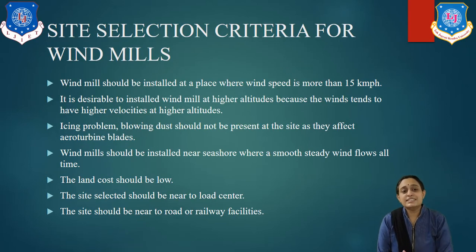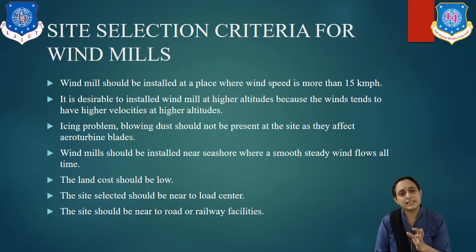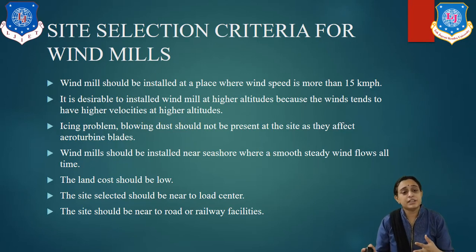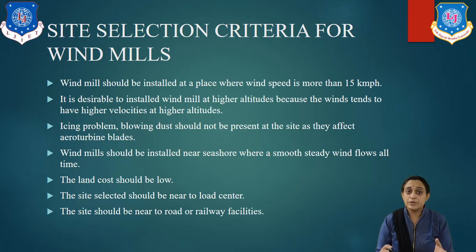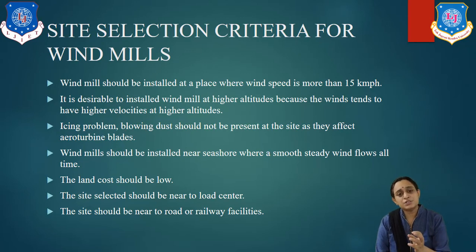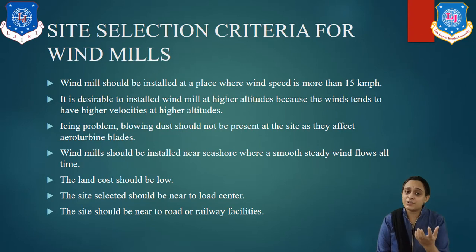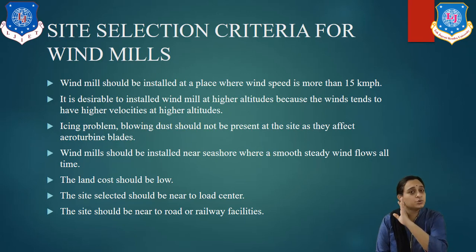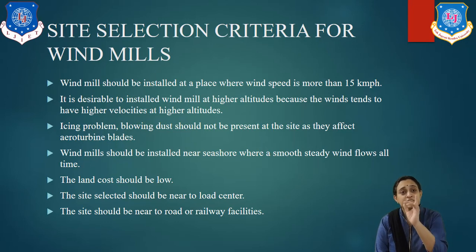Now we consider the site selection criteria for windmills, because the larger components require large space. The site selection is very important. A windmill should be installed at a place where wind speed is more than 5 km per hour, which requires an open area. It is desirable to install a windmill at a higher altitude because wind tends to have higher velocity at higher altitudes. We have already studied that from 10 m to 200 m height, velocity V is proportional to height to the power of 1/7.